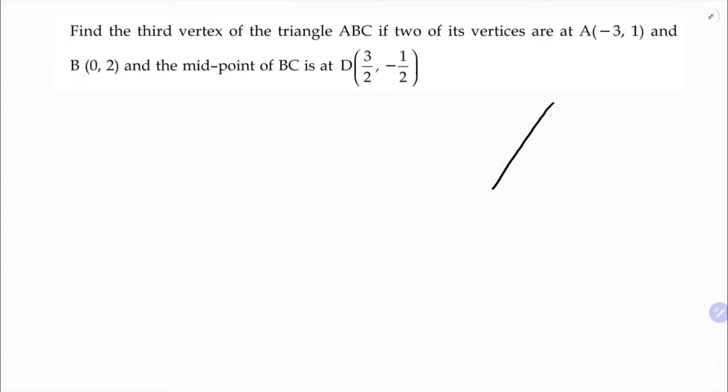Two vertices A and B are given. I'll take A as (-3, 1) and B as (0, 2).